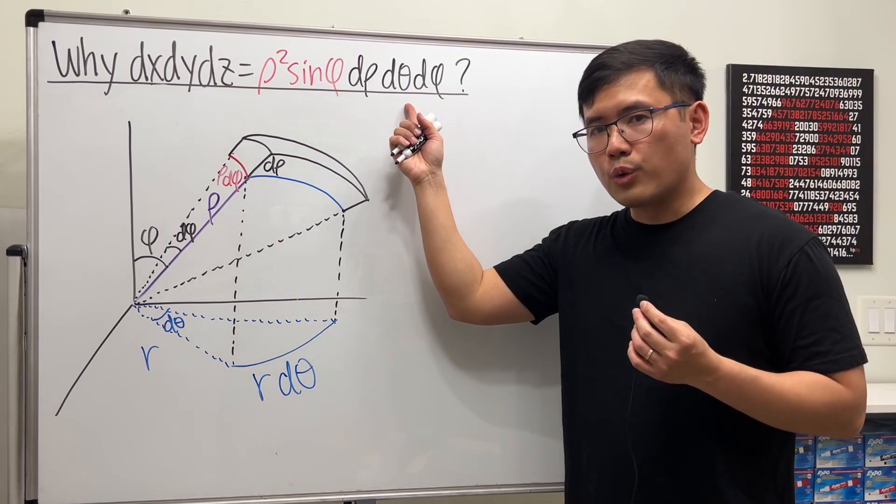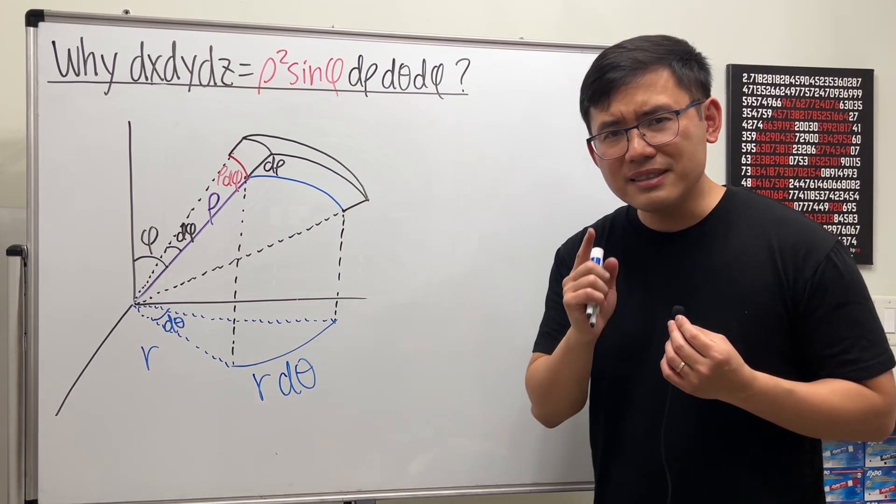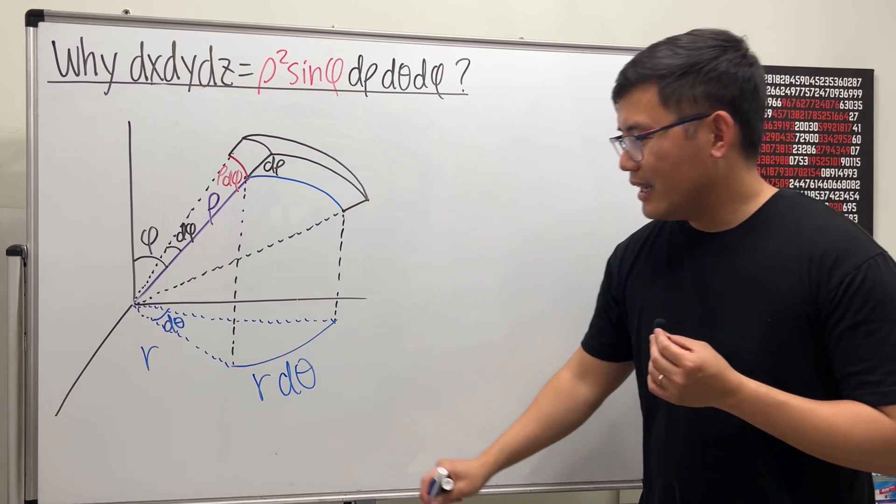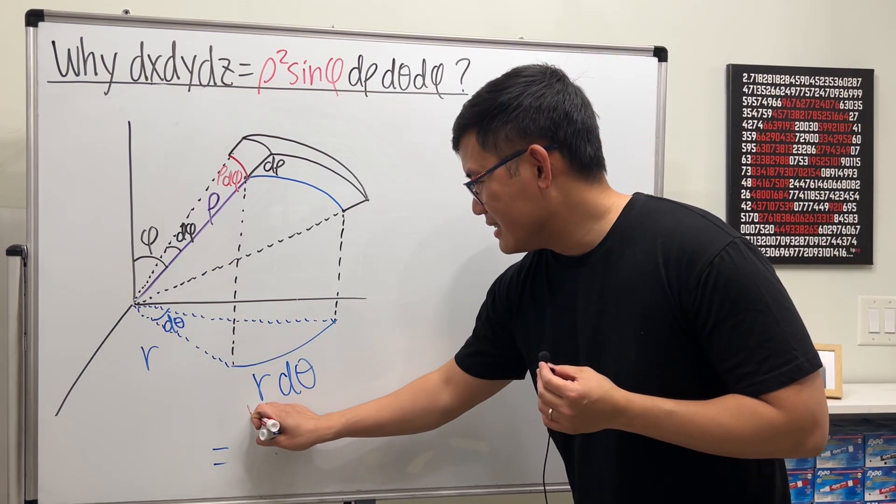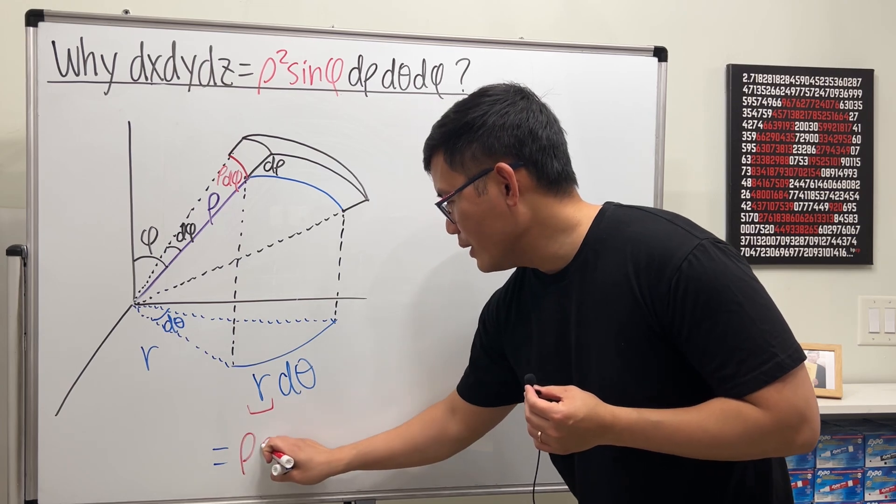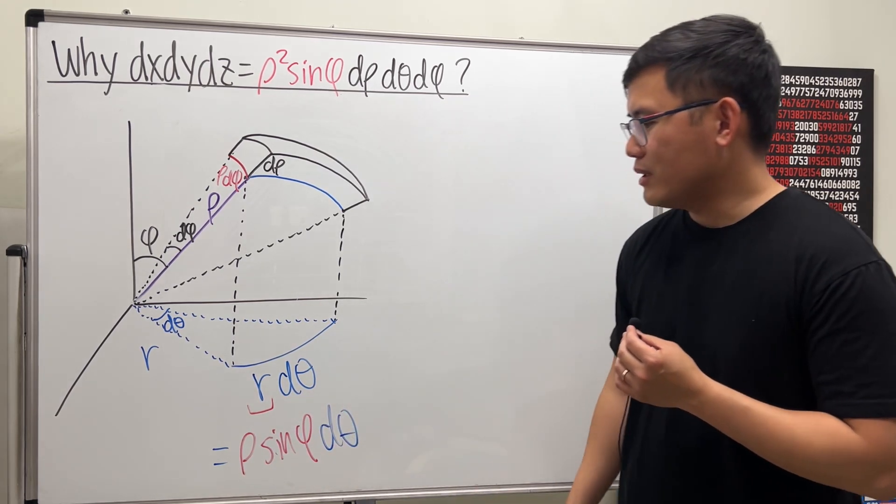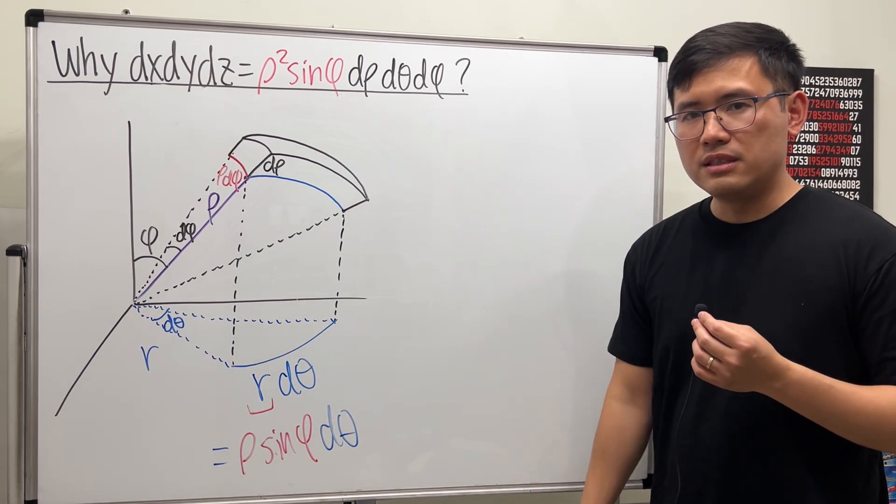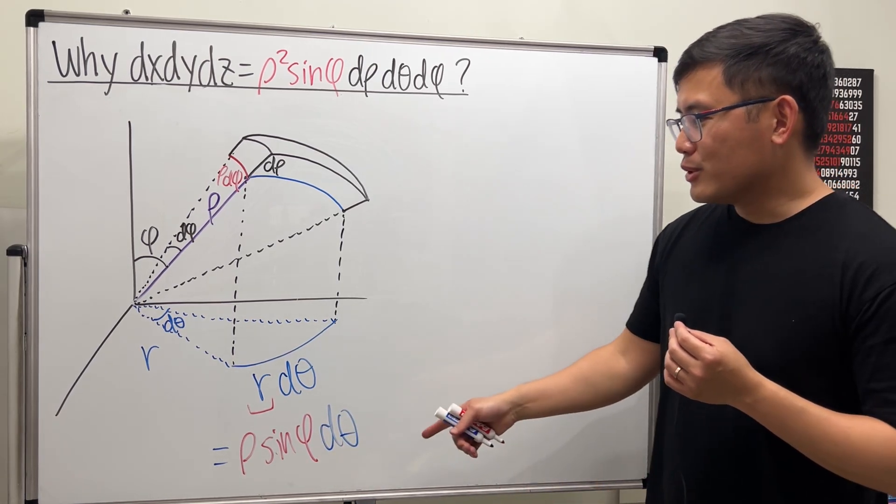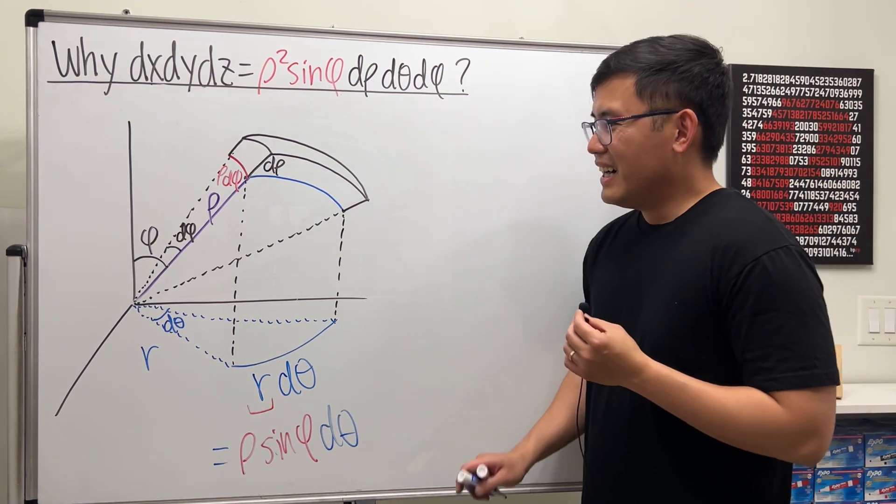But here's a small issue. In the spherical coordinate system, we're not supposed to be using R. But it's okay because I know you've seen my video. Last time I showed you that the R is the same as rho sine phi times d theta. I know you didn't see the video, so I'm going to show you why R equals rho sine phi right here as well.